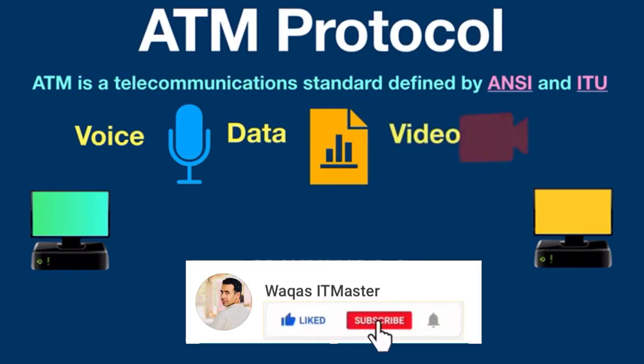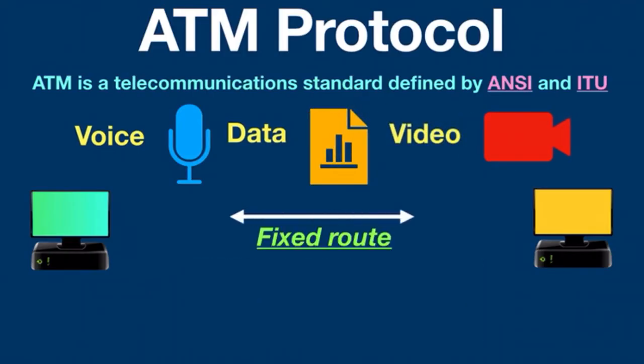ATM creates a fixed route between two endpoints before data transfer begins, which differs from Internet Protocol suite TCP/IP where data is divided into packets, each of which takes a different route to get to its destination.